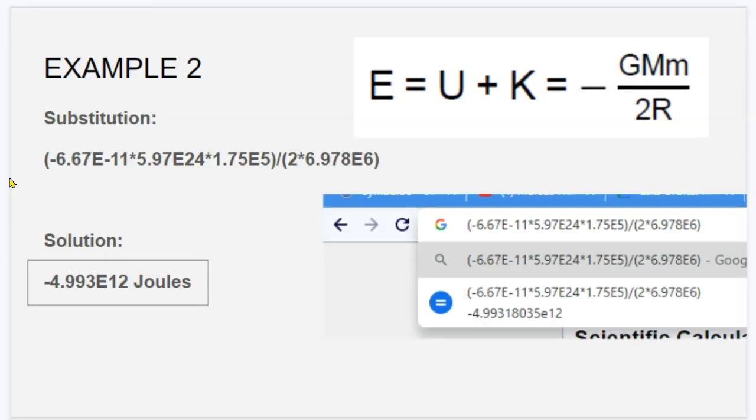When you substitute, you replace G with the universal gravity constant times the mass of the earth times the mass of the satellite divided by 2 times the total distance from the center of the earth to the center of the satellite.